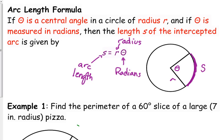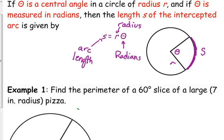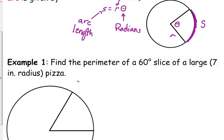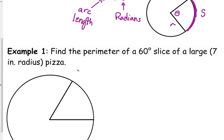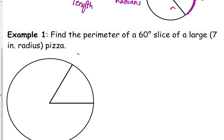So let's start with an application problem. Find the perimeter of a 60 degree slice of a large pizza. We're going to assume that a large pizza is a 14 inch pizza, which means it has a 7 inch radius. So if we're finding the perimeter of this slice, we've got to know what measurements, what do we need?